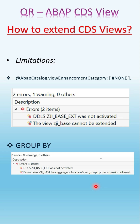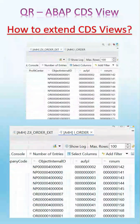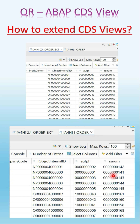So it's not the case that any CDS view can be extended — the answer is no, we do have limitations on it. To create an extension, go to create a data definition and select the template as 'extend view'. Here, IORDER is the standard base view being extended, and along with two fields from the AFKO table via association, the data is filled as well. When you execute the extended view, you see the two fields are added, and if you execute the actual base view, it also has the two fields available at the end of the list.